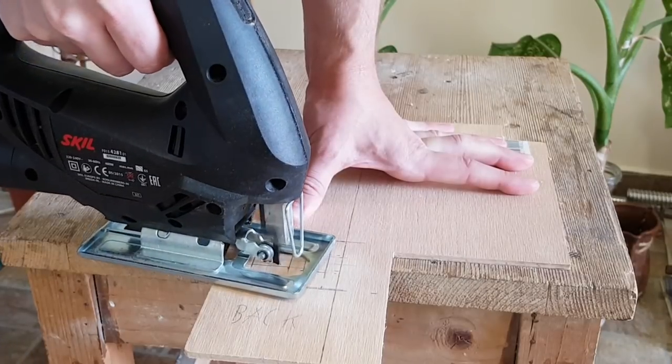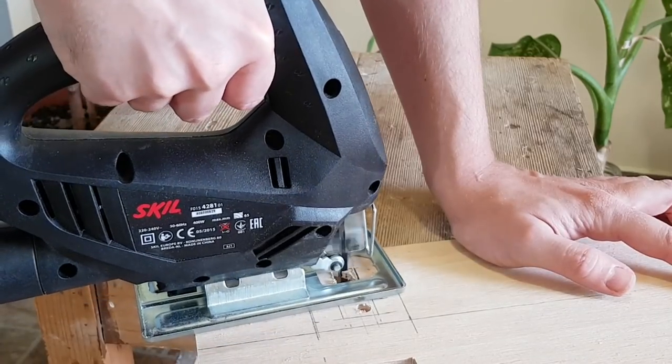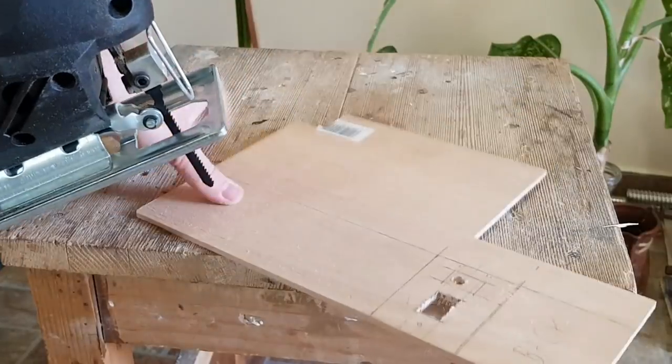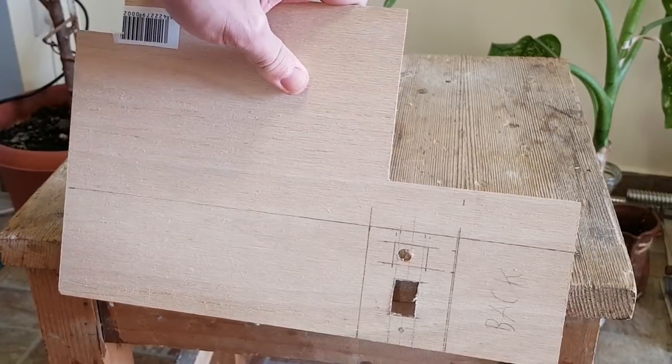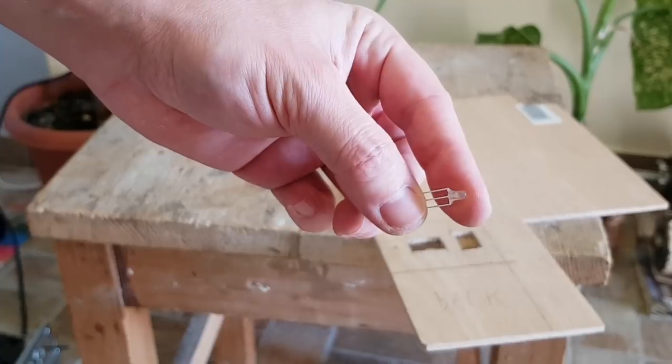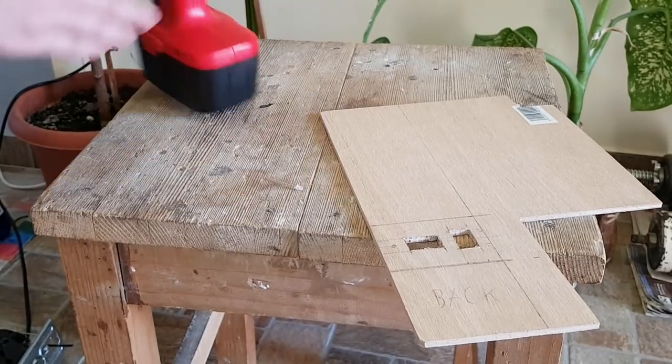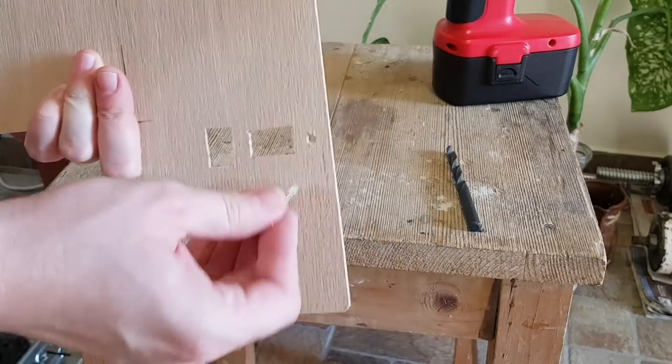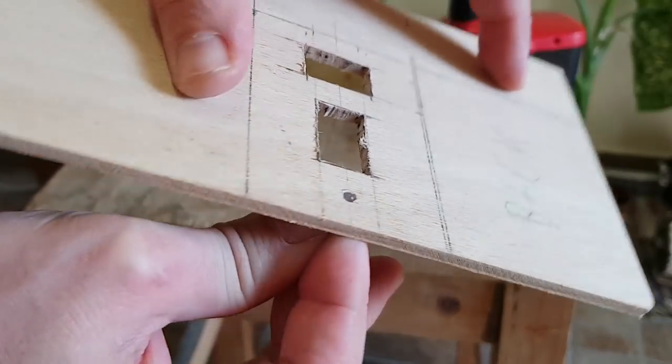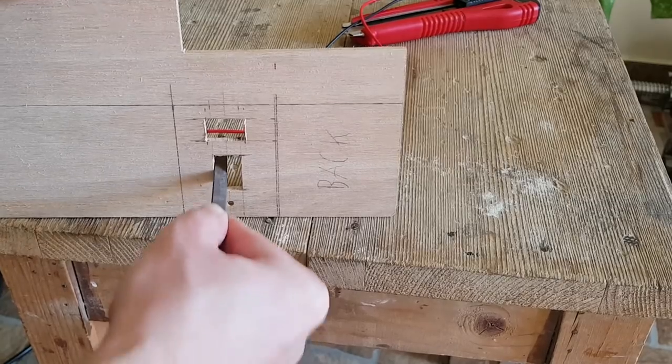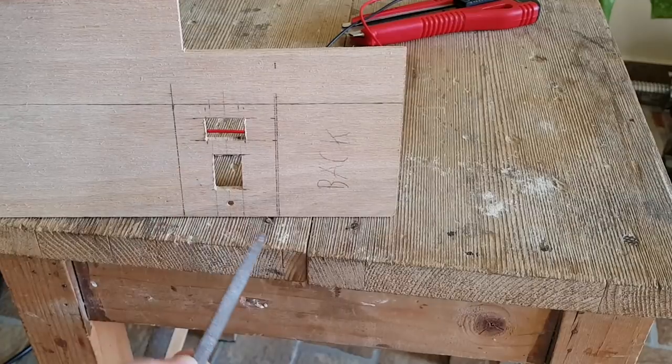If you're wondering why I've started with the holes and not the panels, it's because I can rotate or hold down the plywood sheet much better if it's bigger. The LED needs a 3 mm hole.